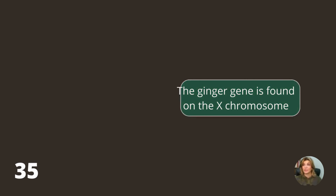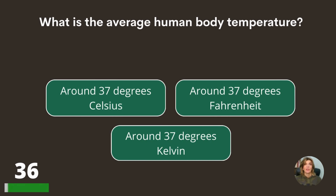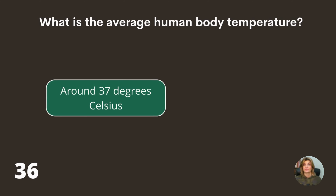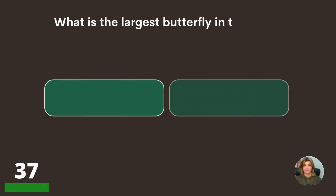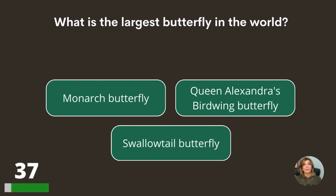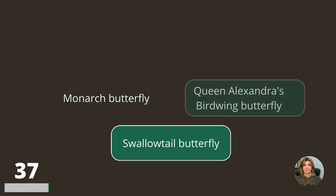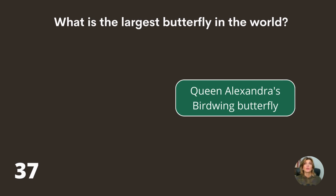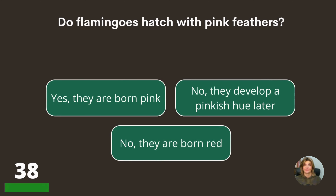The ginger gene is found on the X chromosome. What is the average human body temperature — around 37 degrees Celsius, around 37 degrees Fahrenheit, or around 37 degrees Kelvin? Around 37 degrees Celsius. What is the largest butterfly in the world — the Monarch butterfly or Queen Alexandra's Birdwing butterfly?